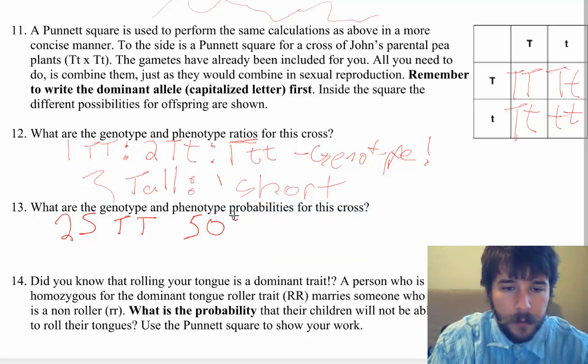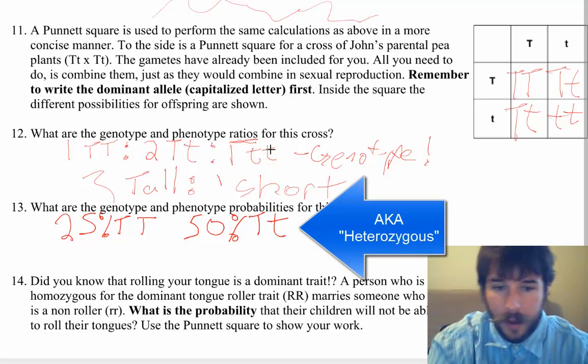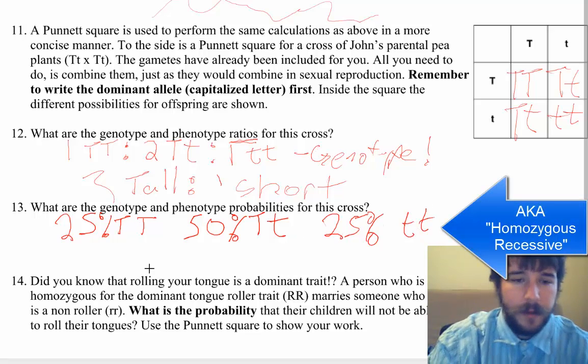There's a 50% chance of being big T, little t, because you can see over here, it's two out of four. And then it's a 25% chance of being little t, little t. Those are the genotype probabilities.